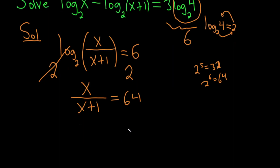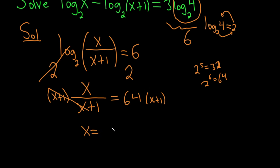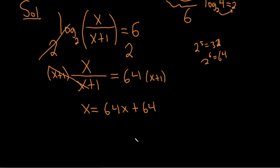If it were log base 3, we'd just put a 3 there and they'd cancel. To solve for x, we need to get rid of the fraction, so let's multiply both sides by x plus 1. These cancel, so we have x equals 64 times x plus 1. Distributing the 64 gives us 64x plus 64. Now subtract 64x from both sides.